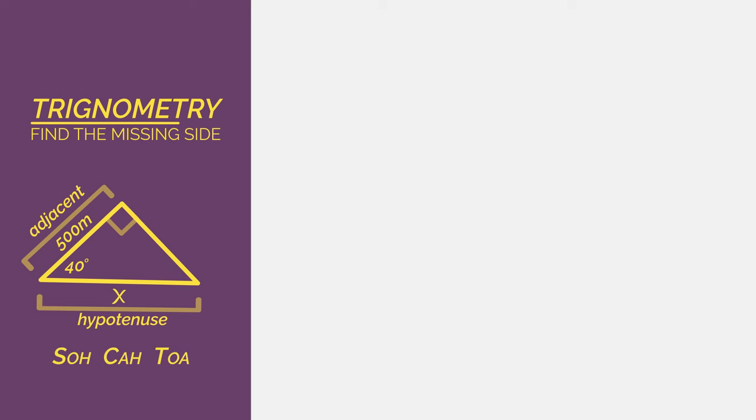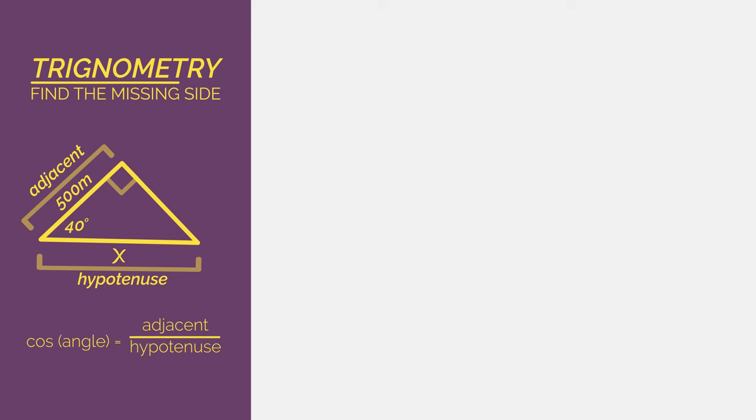So this gives us a and h. So we're going to use cos. So cos angle is the adjacent over hypotenuse and we substitute in our numbers so we get cos 40 equals 500 divided by x. Now for the rearranging.